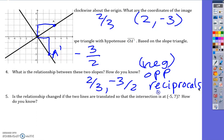Now the question is: has the relationship changed if the two lines are translated so the intersection point is at (-5, 7) or somewhere off the screen? Will the relationship between the slopes change? Think about that and answer question number five on your own.